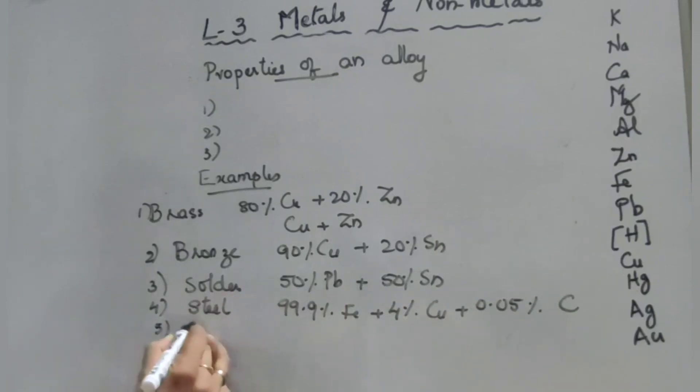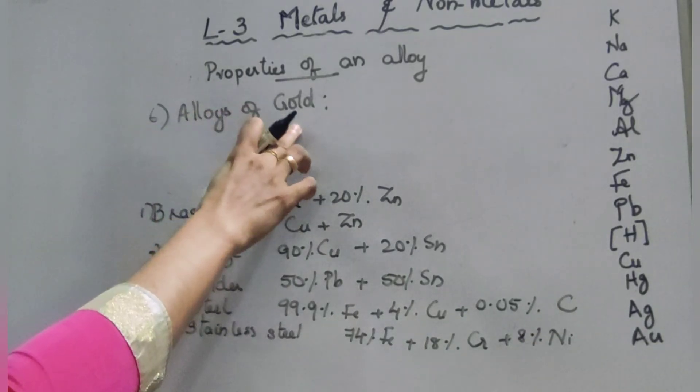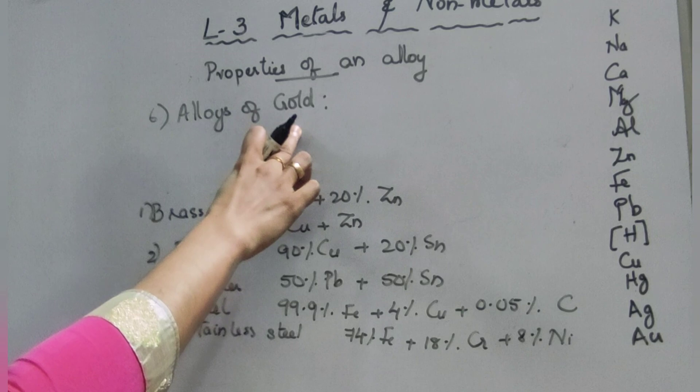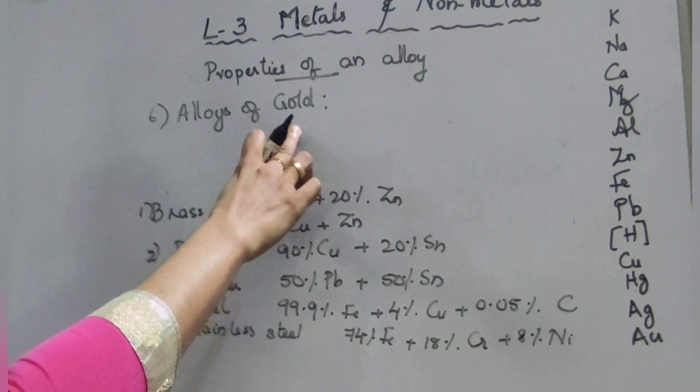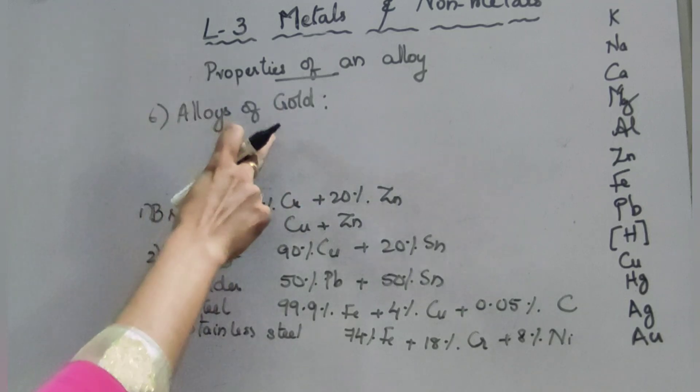Next one, it is stainless steel. That means 74% iron plus 18% chromium plus 8% nickel. Sixth one: alloys of gold. Pure gold is said to be 24 karat. Gold is alloyed with small amount of silver or copper to make it hard.